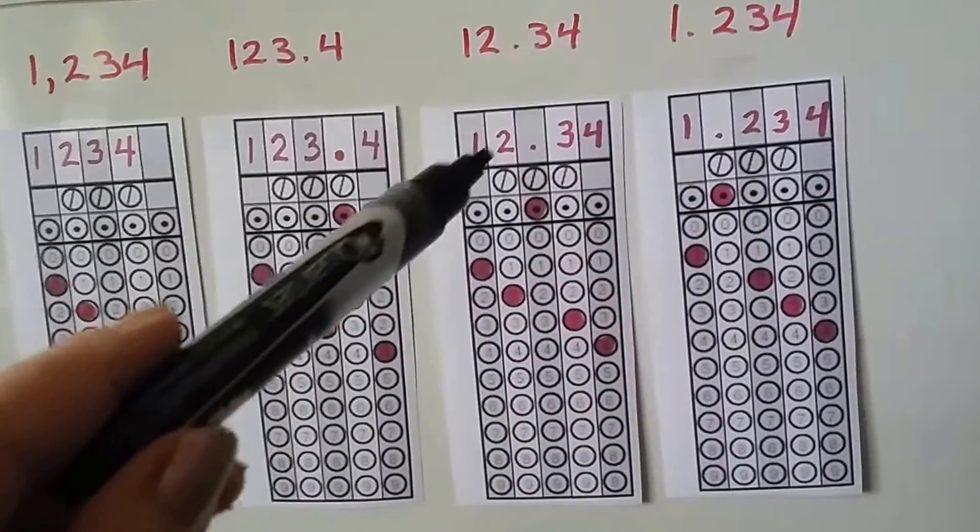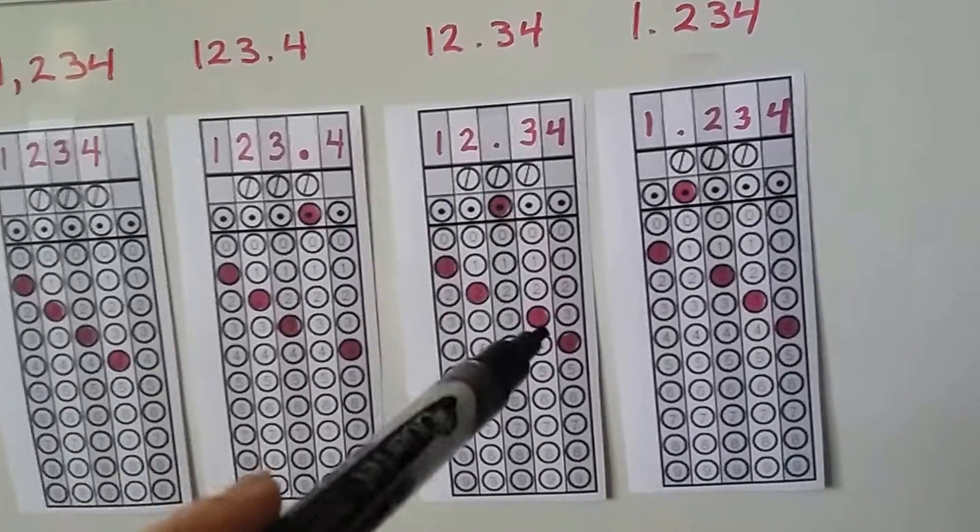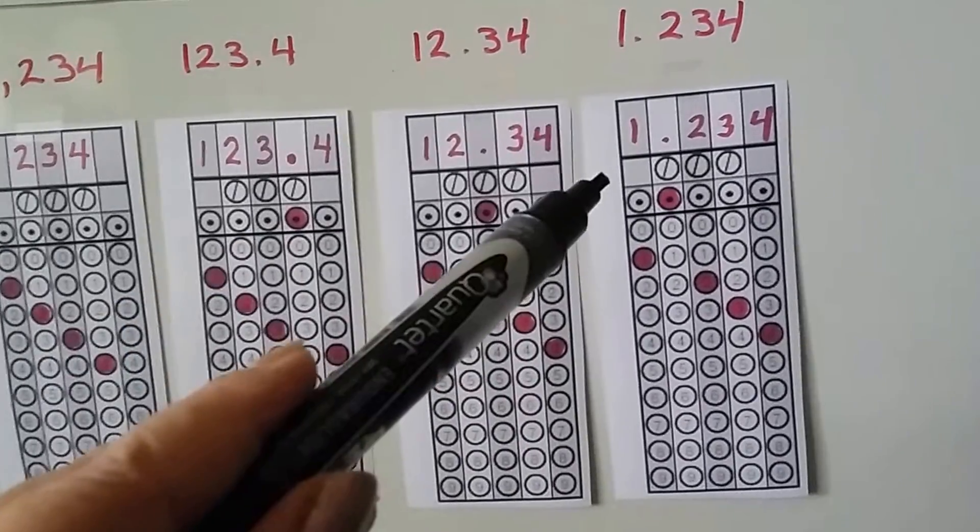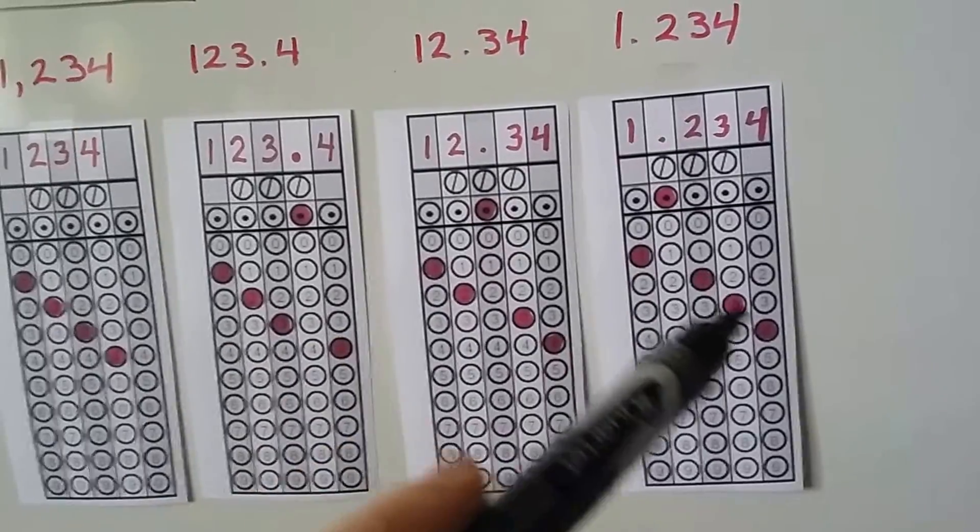12.34, we fill in the 1 and the 2, the decimal point and the 3, 4. 1.234, same thing. We put in the 1, the decimal point, and the 2, 3, 4.